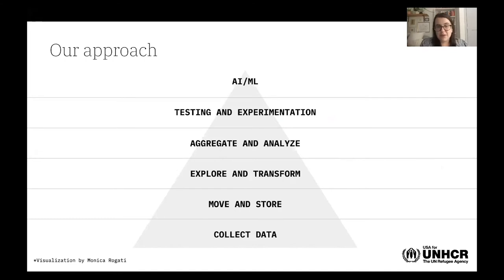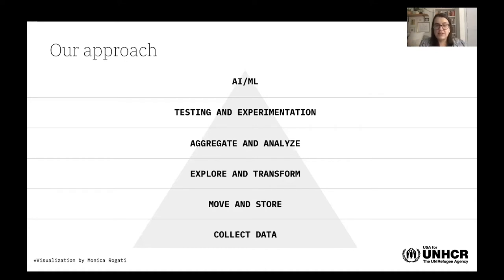Some of you may be familiar with the data science pyramid developed by Monica Rogati, a data scientist at LinkedIn. It really describes how you get to the fun, shiny stuff — that lookalike model we developed after a survey, scoring the entire population. We were really focused on AI and ML, and it got us far. But it wasn't a lack of methodology or understanding the science — it was that we didn't have the right data to support this in the long run.